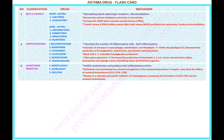Number 3 — name of the classification: leukotriene inhibitors. Drugs: 1) montelukast, 2) zafirlukast, 3) zileuton. Mechanism: inhibit leukotrienes and produce anti-inflammatory action. Zafirlukast and montelukast are selective antagonists of the cysteinyl leukotriene 1 receptor; they block the effects of cysteinyl leukotrienes LTC4, LTD4, and LTE4. Zileuton is a selective and specific inhibitor of 5-lipoxygenase, preventing the formation of both LTB4 and the cysteinyl leukotrienes.